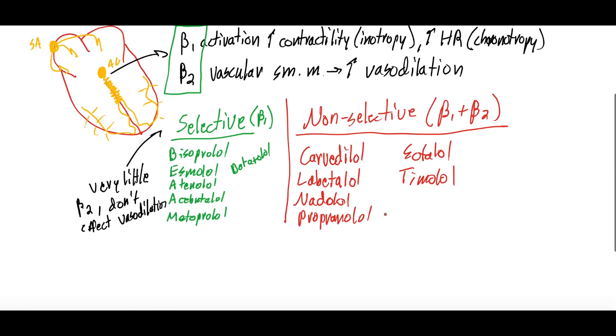When we talk about what they're used for, we primarily think about them for a few things. One, after acute coronary syndrome or myocardial infarction, they are started because they decrease myocardial oxygen demand by decreasing heart rate and contractility.